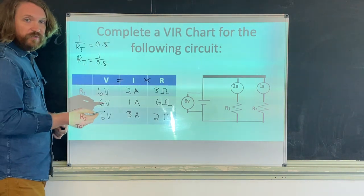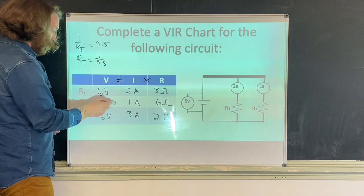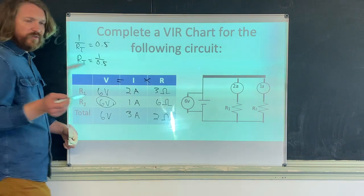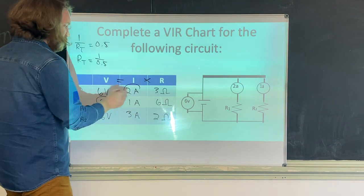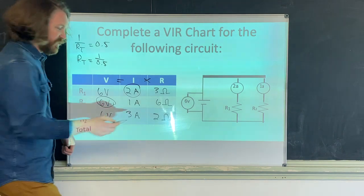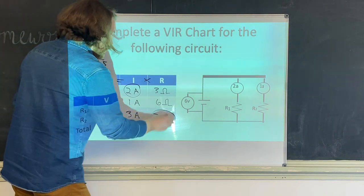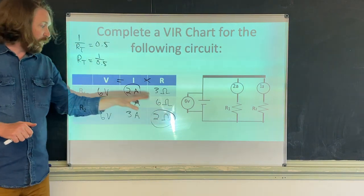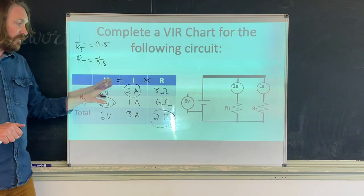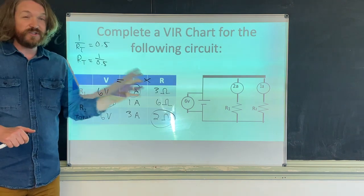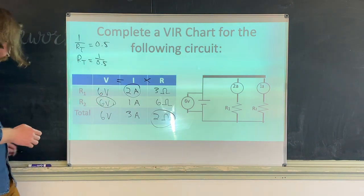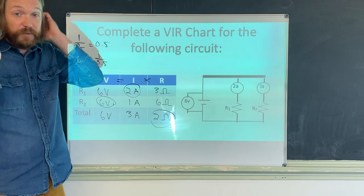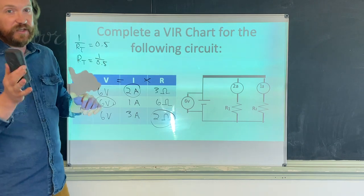Now you can answer any question. What's the voltage at the second resistor? Six volts. How much current does the first resistor use? Two amps. What's the total resistance? Two ohms. Even if you don't need to find the voltage, filling in the VIR chart first saves so much time and triple-checks that everything is correct.